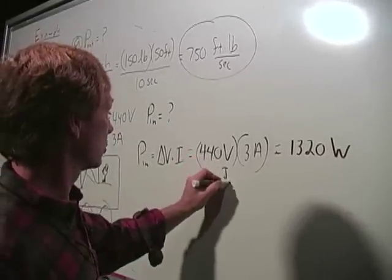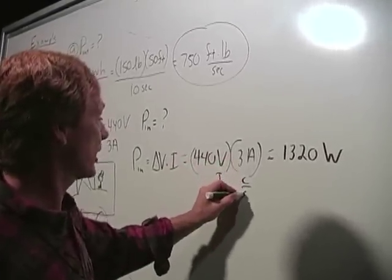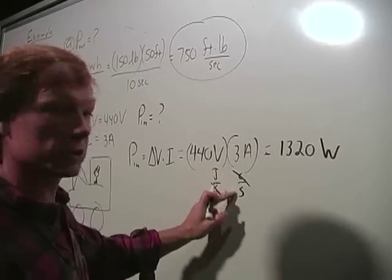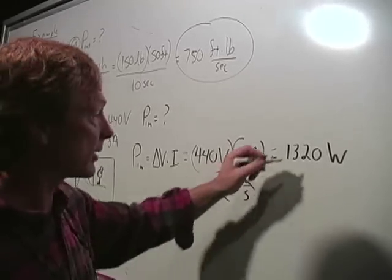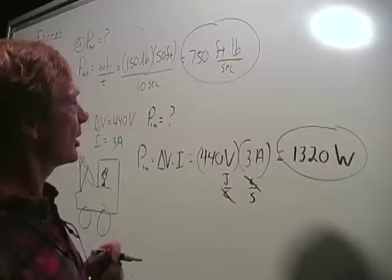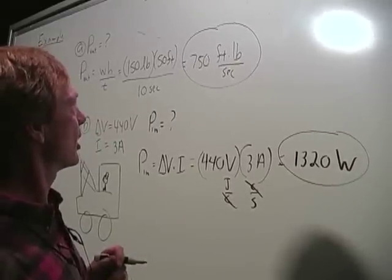Volt is a joule per coulomb. An amp's a coulomb per second. When you multiply them together, you get joules per second, which is a watt. So I've got 1,320 watts.